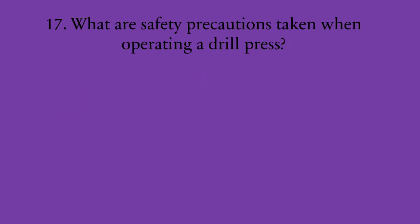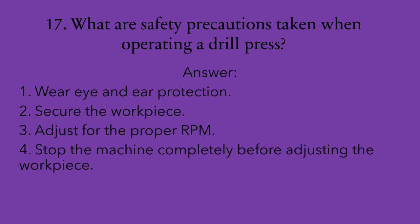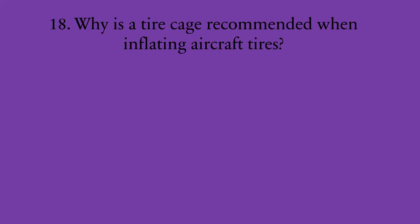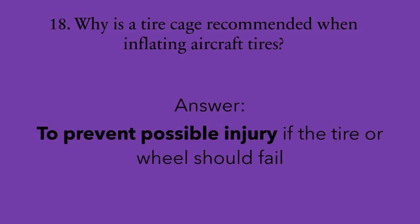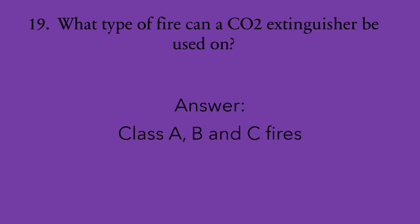Number seventeen: what are safety precautions taken when operating a drill press? One, wear eye protection and ear protection. Two, secure the workpiece. Three, adjust the proper RPM. Four, stop the machine completely before adjusting the workpiece. Five, clean the area. Number eighteen: why is a tire cage recommended when inflating aircraft tires? To prevent possible injury if the tire or the wheel should fail. Number nineteen: what type of fire can a CO2 extinguisher be used on? Class A, B, and C fires.